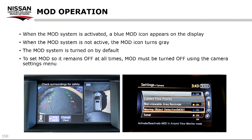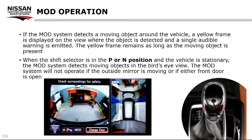MOD operation: when the MOD system is activated, a blue MOD icon appears on the display. When the MOD system is not active, the MOD icon turns gray. The MOD system is turned on by default; to set MOD so it remains off at all times, it must be turned off using the camera settings menu. If the MOD system detects a moving object around the vehicle, a yellow frame is displayed on the view where the object is detected and a single audible warning is emitted. The yellow frame remains as long as the moving object is present.